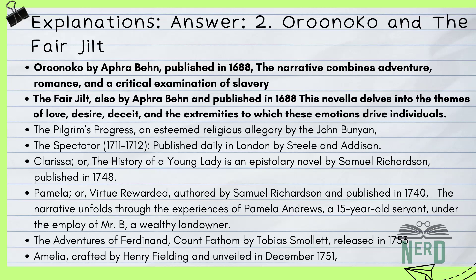The Fair Jilt is another of Behn's creations, also from 1688, and it's all about the wild roller coaster of love, passion, and the crazy stuff people do for it. Through Miranda, the main character, Behn dives into the mess and drama of love gone wrong. It's a mix of juicy gossip and a critical look at society's norms, showing the power of storytelling before novels took over. These two are perfect examples for the UGC Net exam because they show how prose romance was doing its thing before novels became the norm — like the precursors to the novel genre, mixing personal drama with broader societal issues.